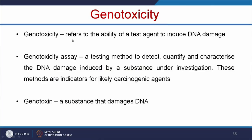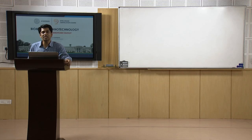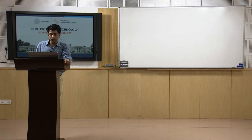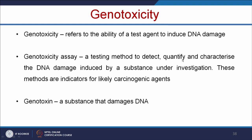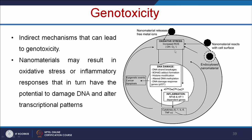Let us see what is genotoxicity. Genotoxicity refers to the ability of a test reagent to induce DNA damage. Cytotoxicity means toxic to cells, while genotoxicity means damage to genetic material. Genotoxicity assays can detect, quantify, and characterize the DNA damage induced by the substance under investigation. These methods are indicators for likely carcinogenic agents — a substance that damages DNA is called genotoxic. Nanomaterials release free metal ions that induce oxidative stress, which damages DNA and can induce apoptosis or inflammation. We have to understand whether a nanomaterial is inducing any damage to DNA.